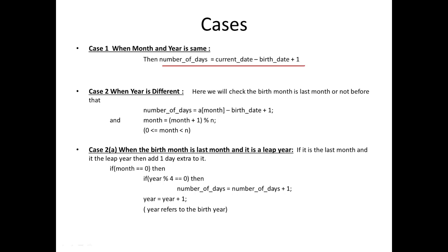When the years are different, we find the number of days remaining in the birth month using A[month] minus birth date plus one. Then we increment month by one and take modulus N. This is because the month is an array index lying between 0 and N minus 1, so whenever month becomes N, N modulus N equals 0.